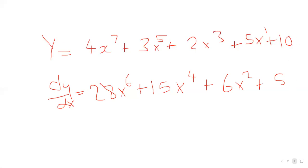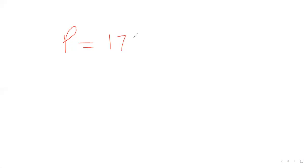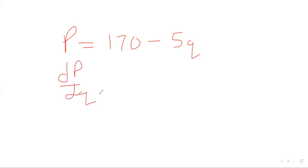The ten has no letter, so it falls out as a constant. So if we have the function 10p equal to 170 minus 5Q cubed, the derivative dp/dQ — 170 falls out as a constant, and we simply simplify together.